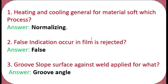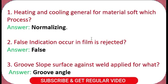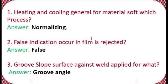Question 1: Heating and cooling in general for materials — which process makes material soft? The answer is normalizing. Question 2: If a false indication occurs in a radiography film, is it rejected? The answer is false — a false indication does not mean the film is rejected.